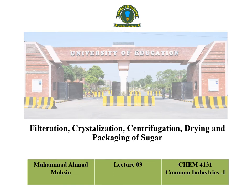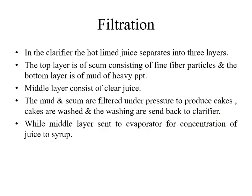After removing the impurities from the raw cane juice, it is further sent to the next processing unit that we will discuss today in detail. First of all, we will discuss the filtration process. Filtration is the first process after clarification of the raw juice of sugar cane.